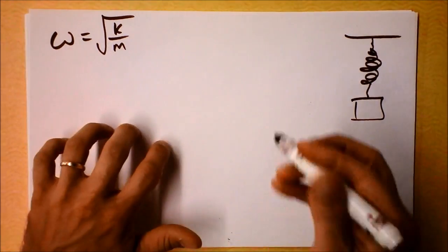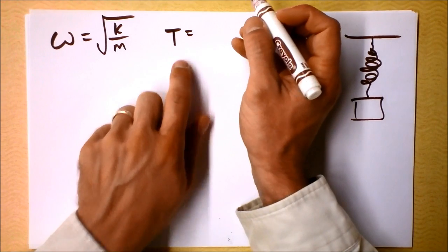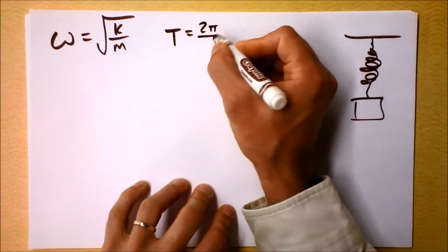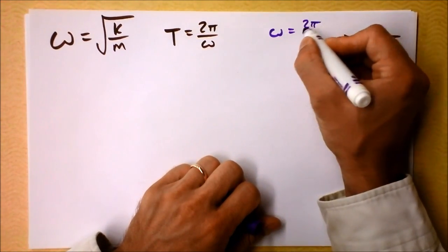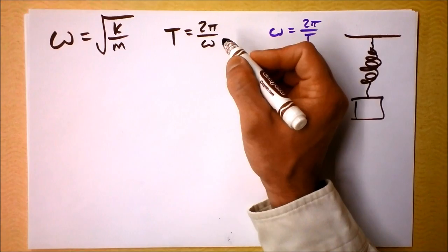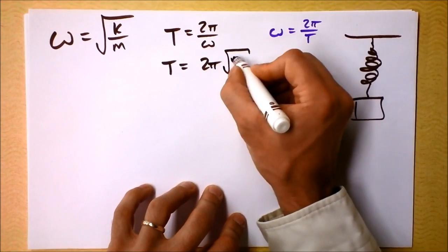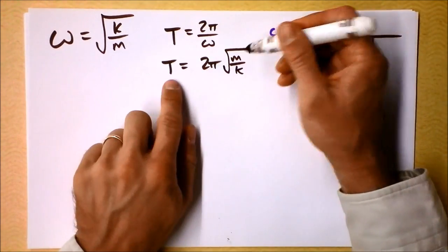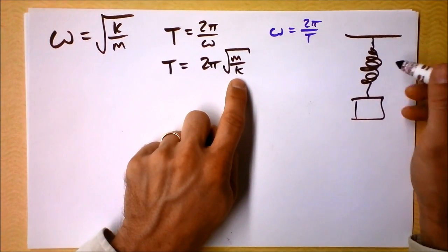The next thing is the relationship between period and omega. The period is 2π divided by omega, which we can get from the definition that omega equals 2π over period. We know that omega is √(k/m), so we can write the period of a mass on a spring as T = 2π√(m/k). This says: as the mass increases, the period increases; and as the spring gets tougher, the time to return to the starting position decreases.